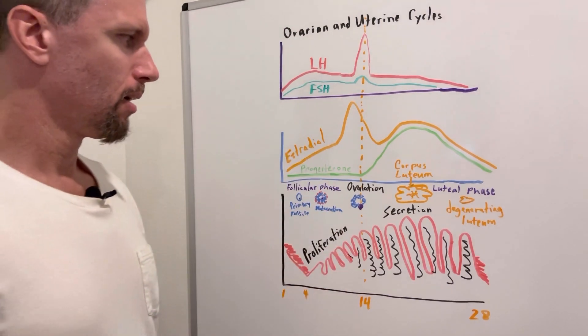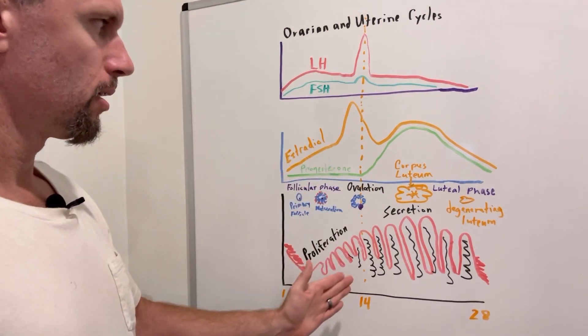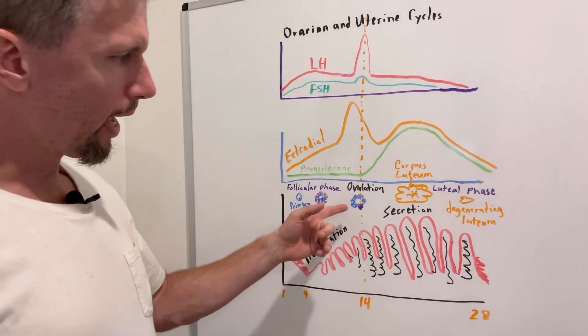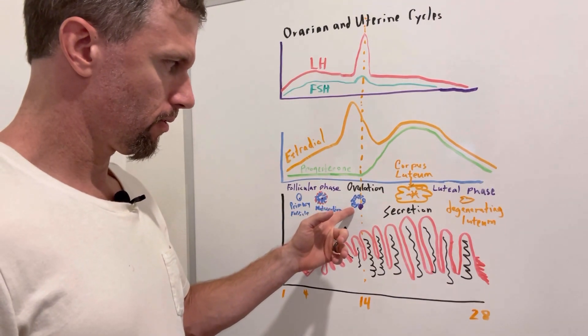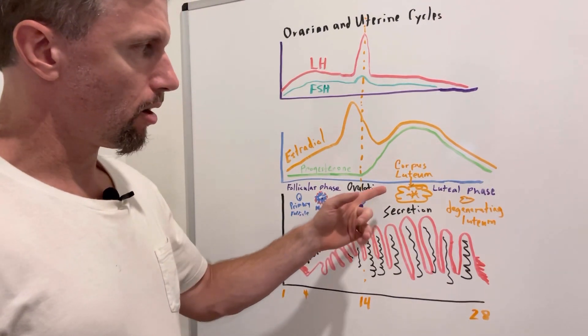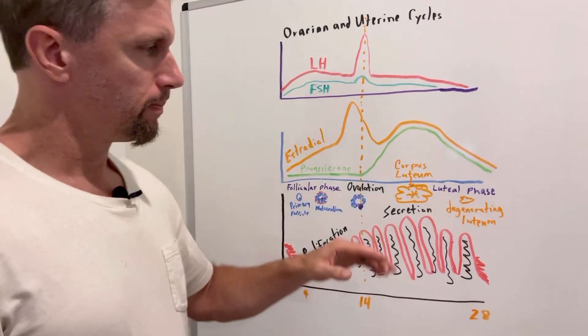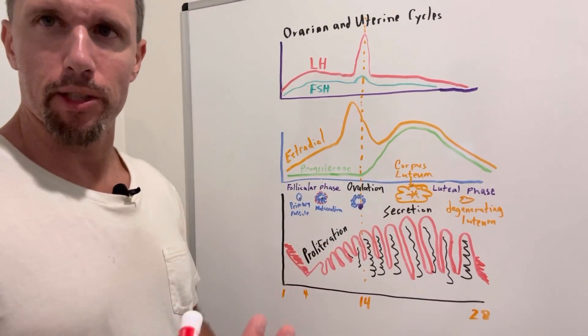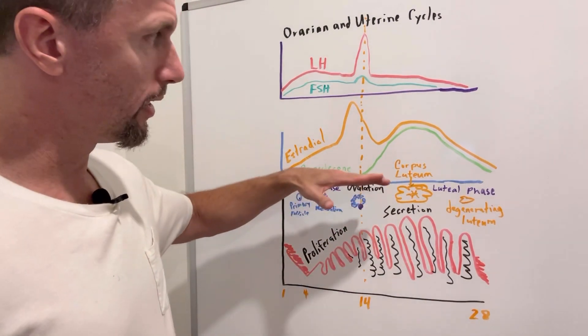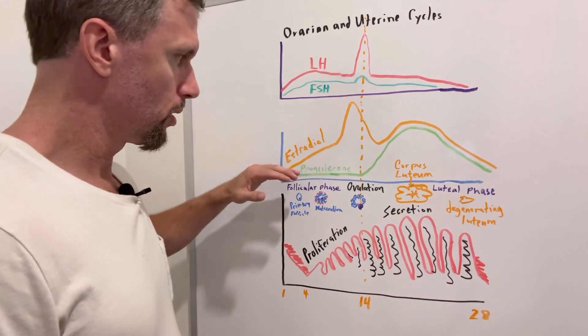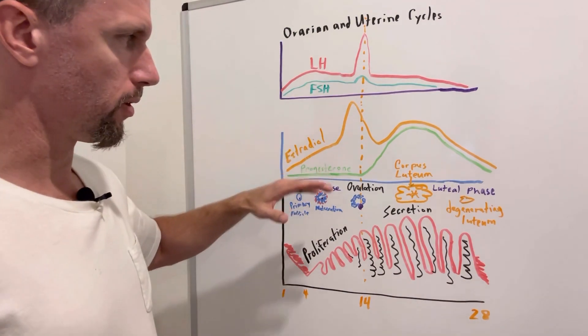Then day 14 is kind of this major event, ovulation. And at that point, you have what's left of this follicle. And it's called the corpus luteum at this point. Luteum because it has a yellowish tint to it. And it will release two steroid hormones, estradiol and progesterone.